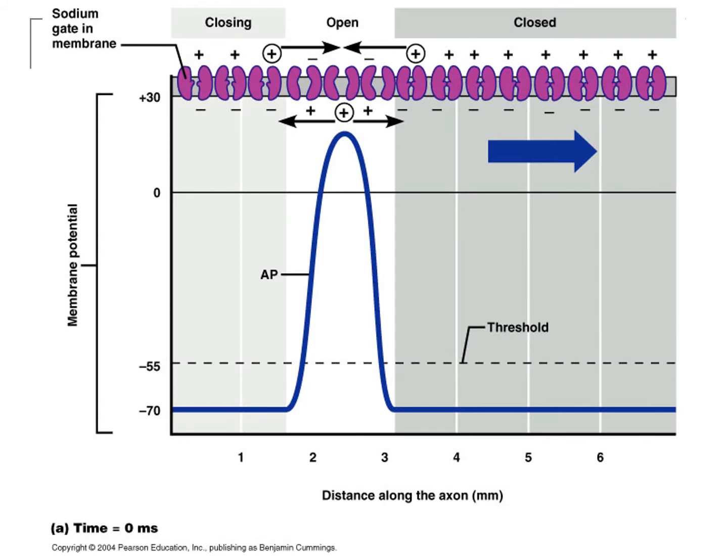Looking at what's happening on the axon — the graph shows distance along the axon in millimeters. Between millimeters 2 and 3, you've got sodium channels that are open. Downstream to the right, sodium channels are closed. Back to the left, sodium channels are inactivating. Basically, only a small segment of the axon is actually going through an action potential, and with propagation it simply spreads down the axon.